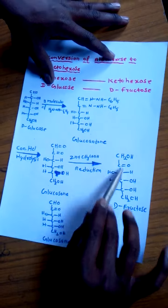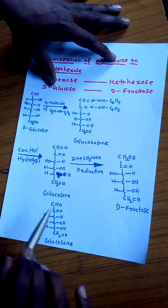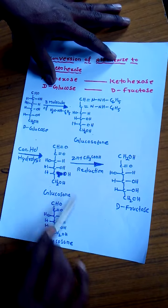So the structure of fructose is like this. So like that we get the fructose from glucose. The glucosone structure is written once again neatly here.